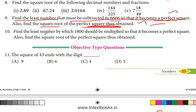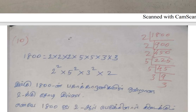Find the least number by which 1800 should be multiplied so that it becomes a perfect square. Find the square root. If you have a perfect square number, you can find the square root. We will solve 1800 by the factorization method.